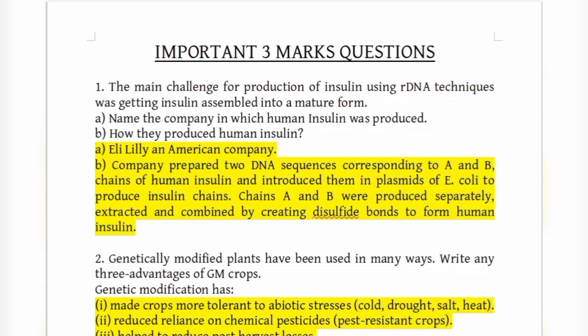The main challenge for production of insulin using recombinant DNA techniques was getting insulin assembled into its mature form. Human insulin was first produced by Eli Lilly, an American company.